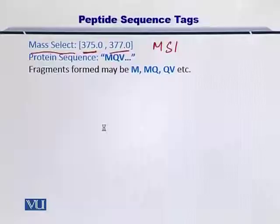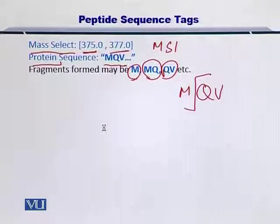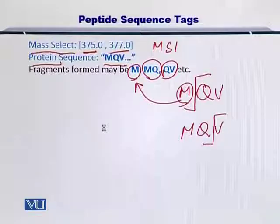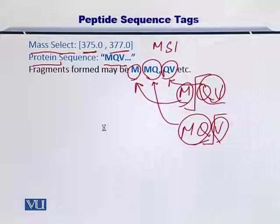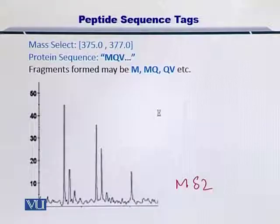If the initial sequence of the protein was something like MQV and you manage to fragment it in MS2, you can obtain fragments of the protein. These fragments arise if you cleave the protein at specific sites, yielding fragments such as M, MQ, MQV, or V. If you fragment the protein at a specific site, these possible fragments can be reported. Let's assume this is the MS2 spectrum obtained from the mass spectrometer.